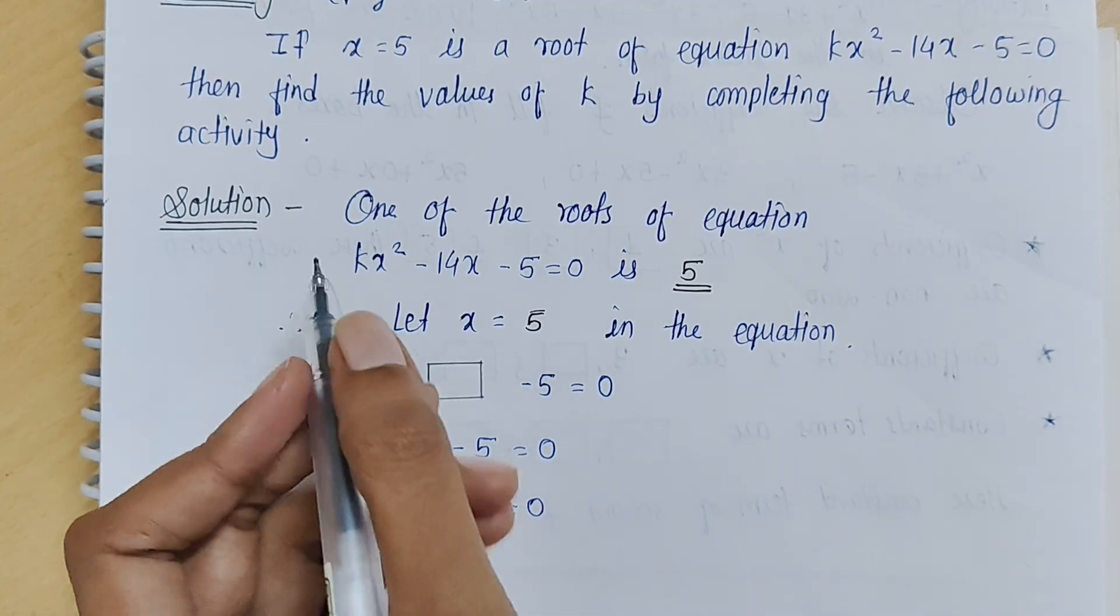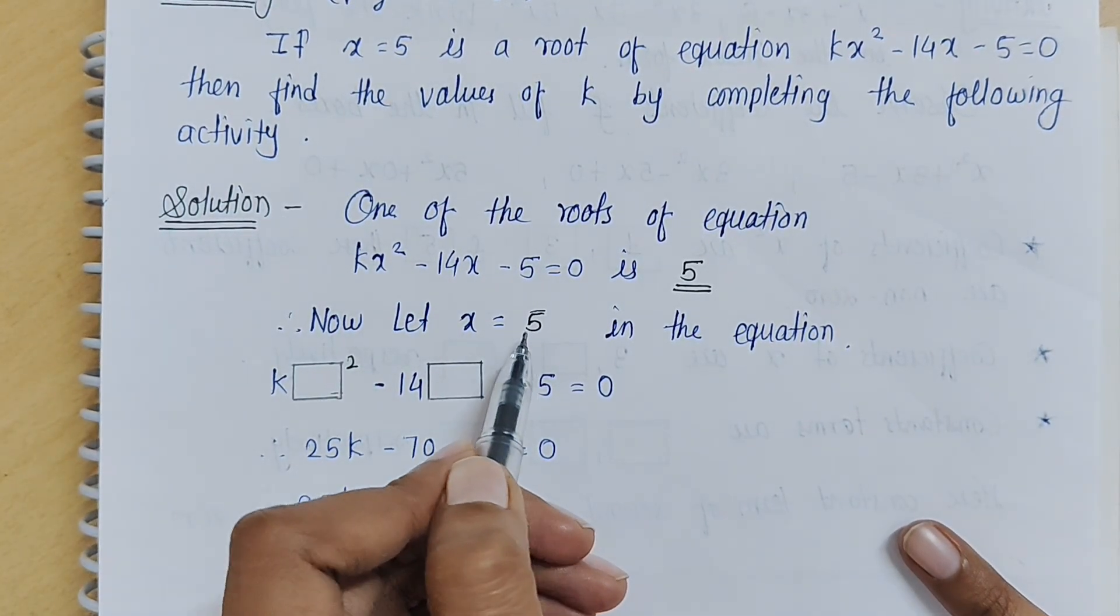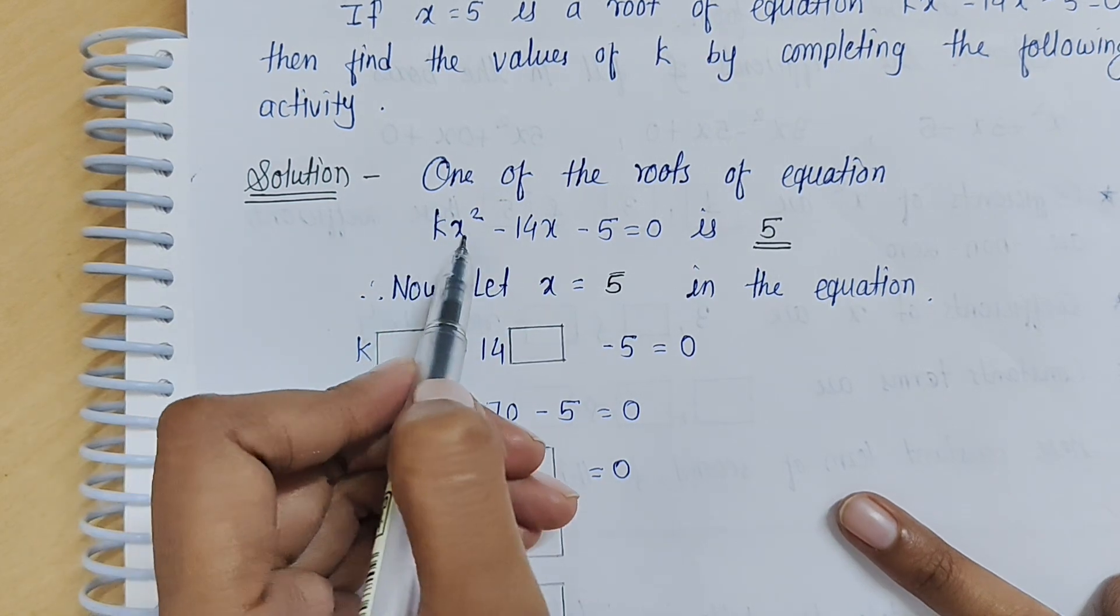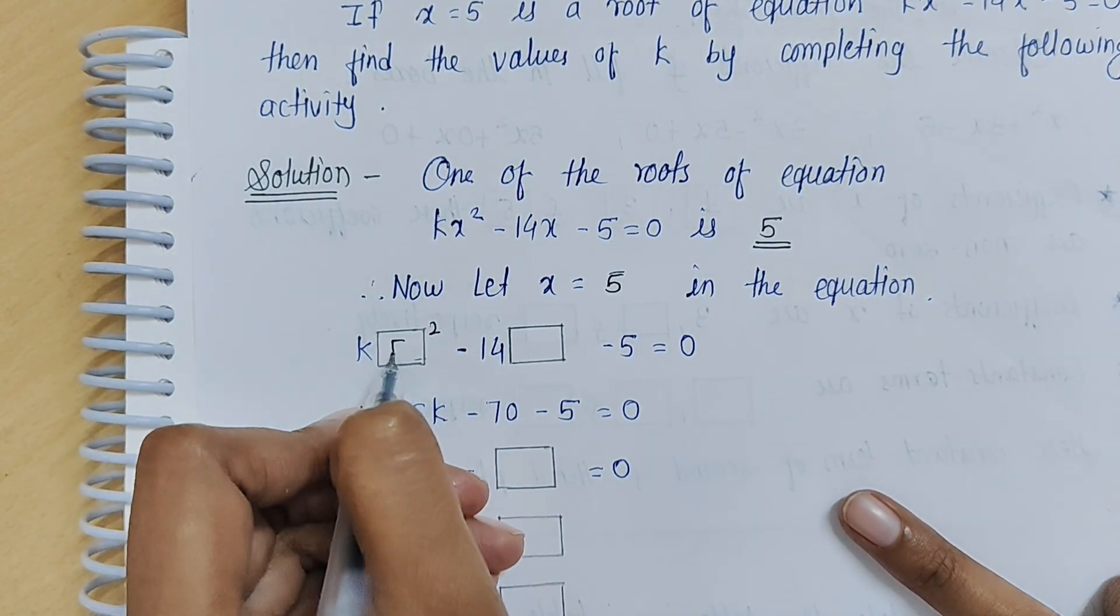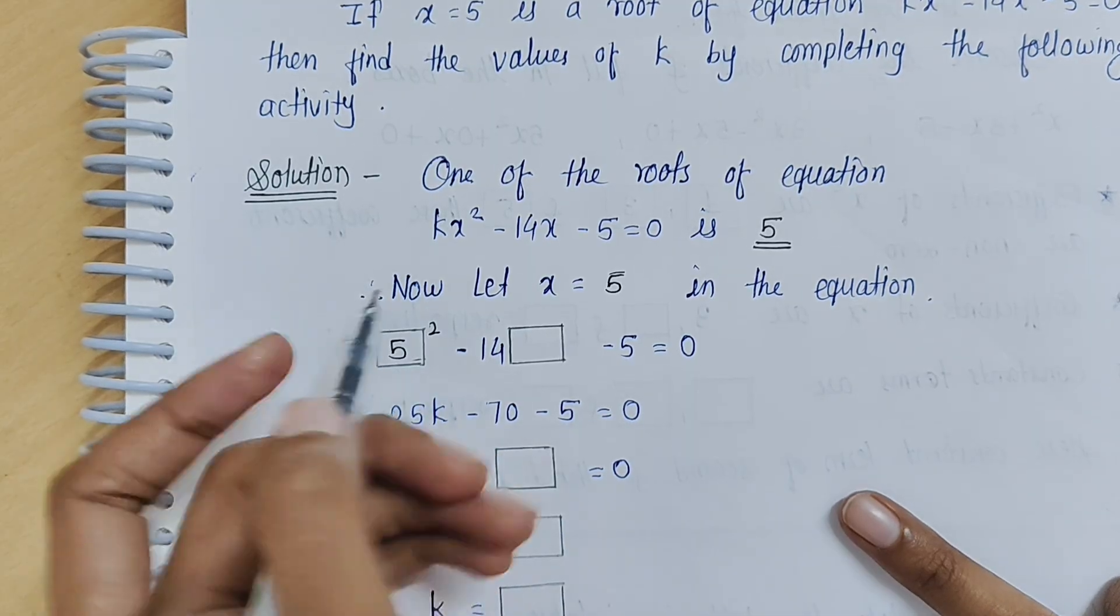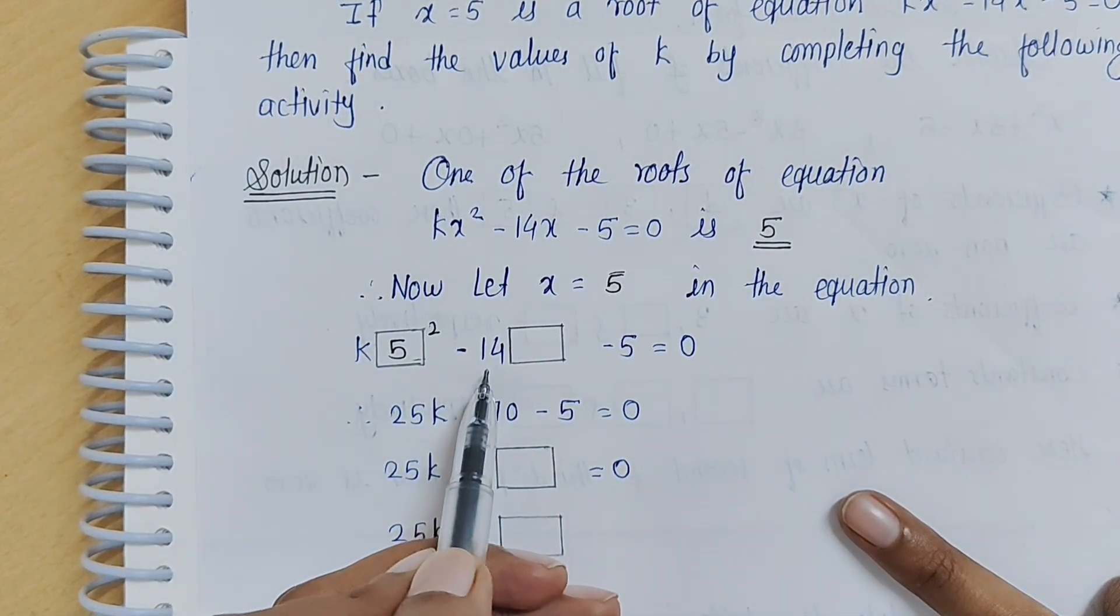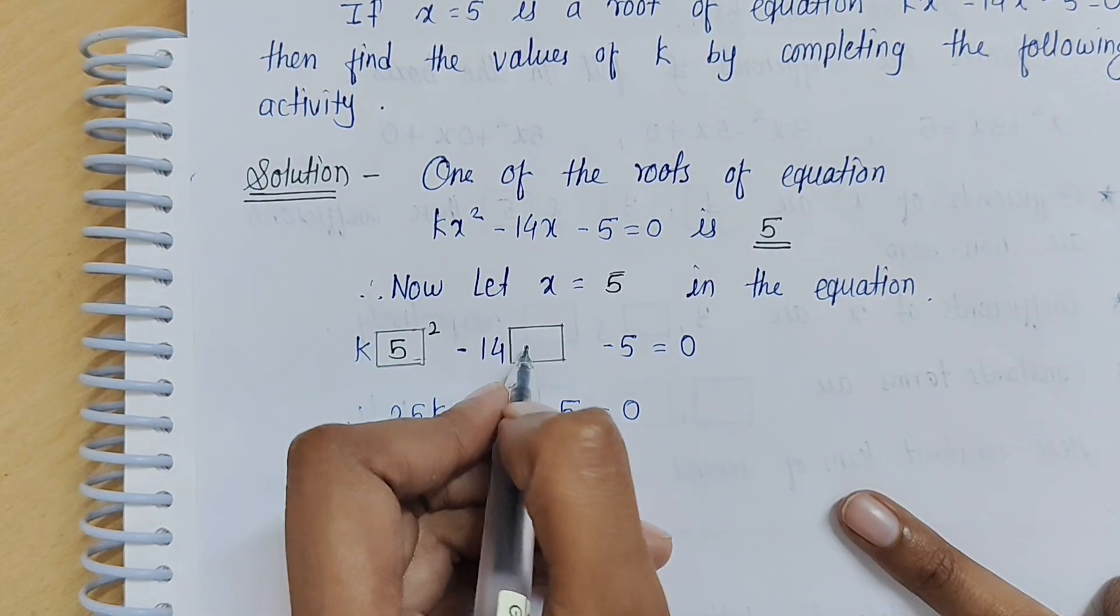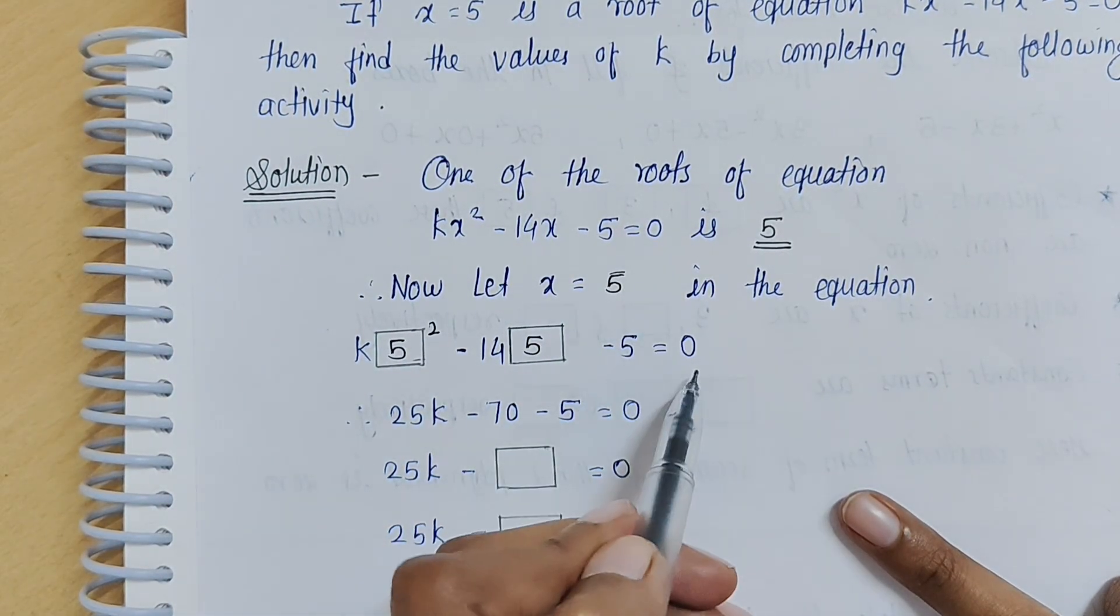We will put x equals 5 in this equation. So k into x square: here will be 5 squared, minus 14x, so x will be 5, and minus 5 as it is given, equals 0.